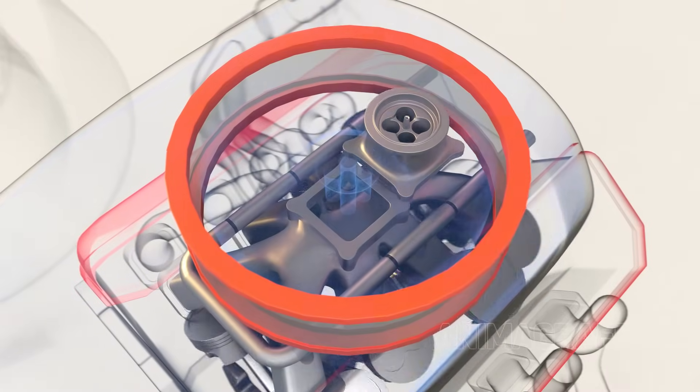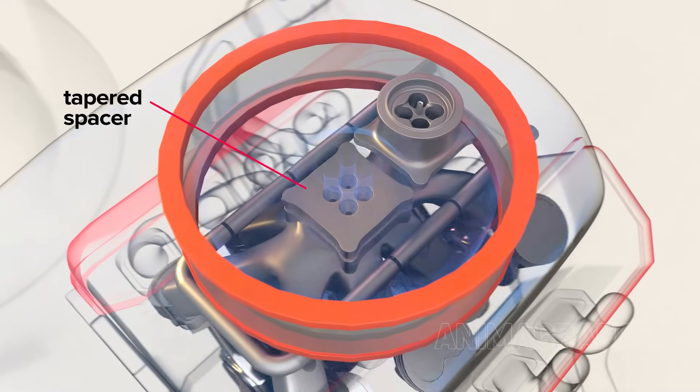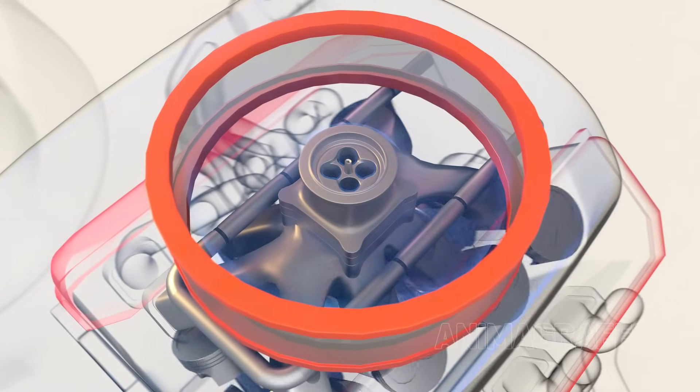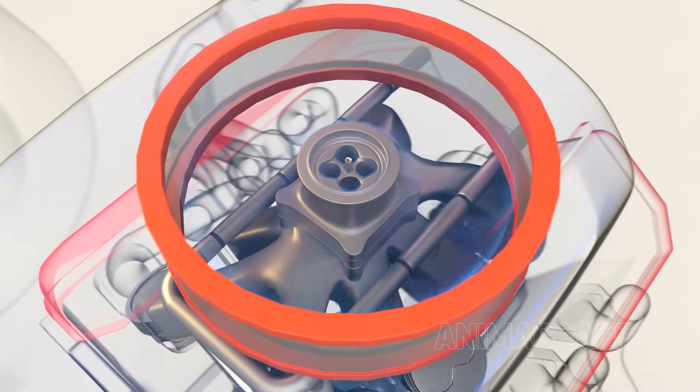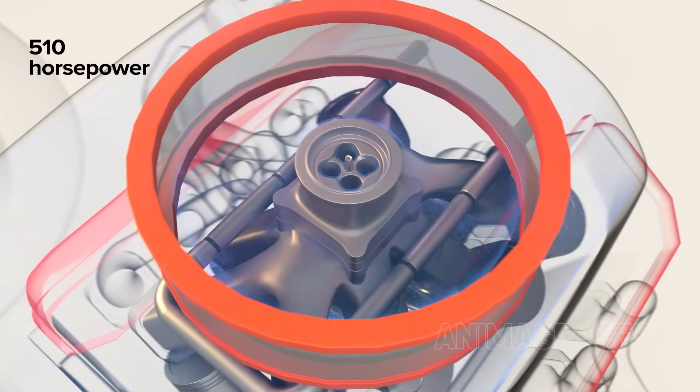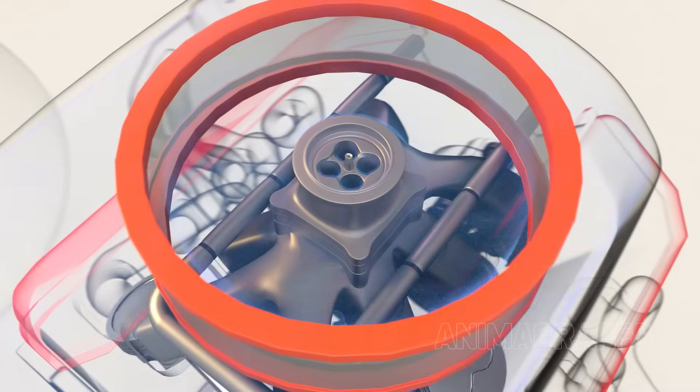On super speedway courses, a tapered spacer is installed in the air intake path to limit air flow, effectively decreasing engine output to around 510 horsepower for safer racing speeds.